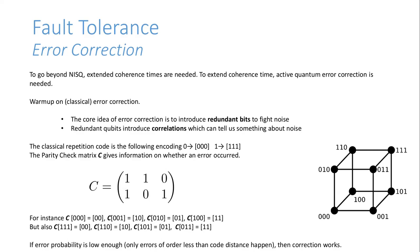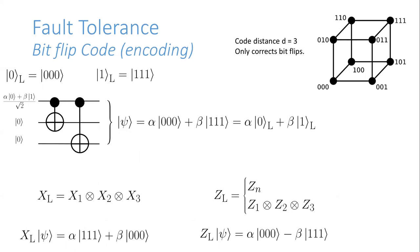If we want to copy a superposition state, applying the copying operator doesn't give us two copies of ψ — we just get an entangled state. The question is whether we can use the copying we can do to put some resilience into our data, and that's what we'll try with the first code. This is a very simple code, next to useless for practical purposes but good for illustration. The idea is that our logical qubit is made up of multiple physical qubits.